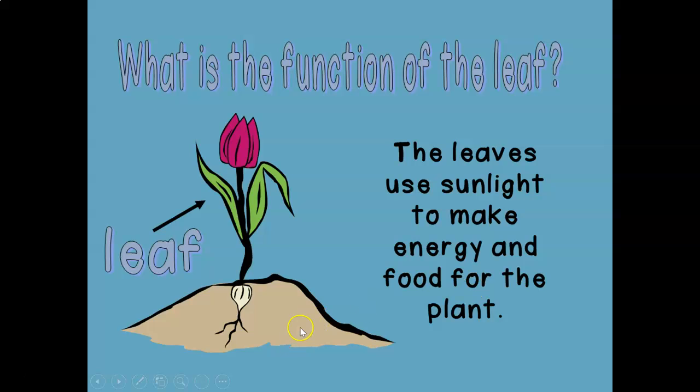The third part is called a leaf. What is the special job of the leaf? The leaves use sunlight to make energy and food for the plant. So basically this is where the plant makes its food.